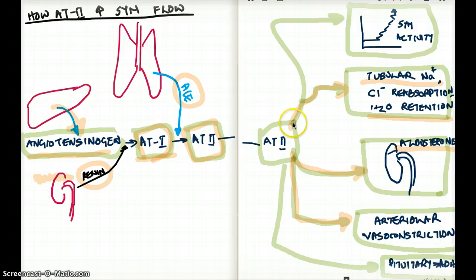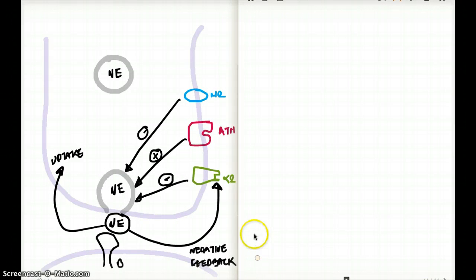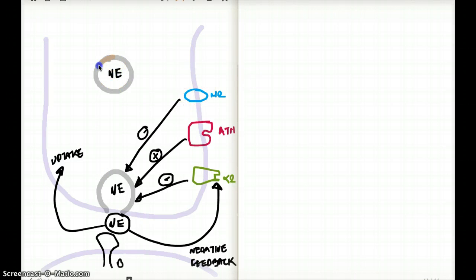But most importantly, angiotensin II is also going to stimulate sympathetic activity — it's going to increase sympathetic activity. Now, this is a graph of a sympathetic neurotransmitter. We can see that norepinephrine is coming at the vesicle and it's merging with the presynaptic vesicle, releasing norepinephrine into the synapse. This norepinephrine release is stimulated by other receptors.